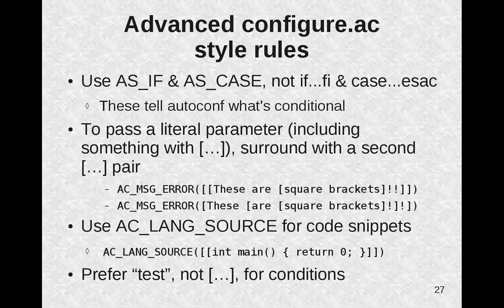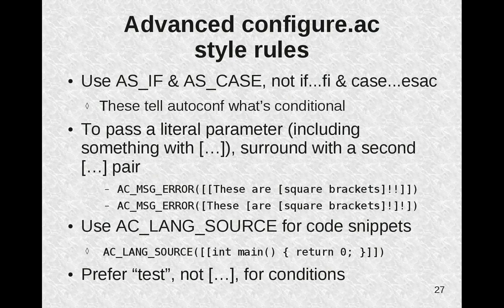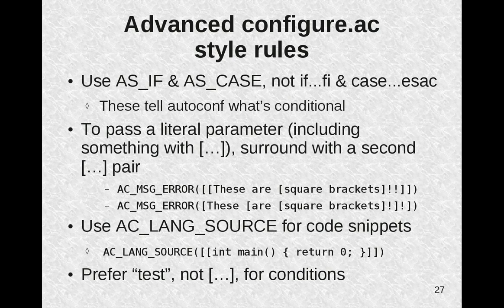I don't have time to go through all of the information about the autotools, but here are some style rules that will help keep you out of trouble while editing your configure.ac file. First, you should use AS_IF and AS_CASE, not if/fi/case/esac — these tell autoconf what's conditional. To pass a literal parameter including something with square brackets itself, surround it with a second pair of square brackets. The second pair don't have to be directly inside the first pair, but it's probably a good idea.